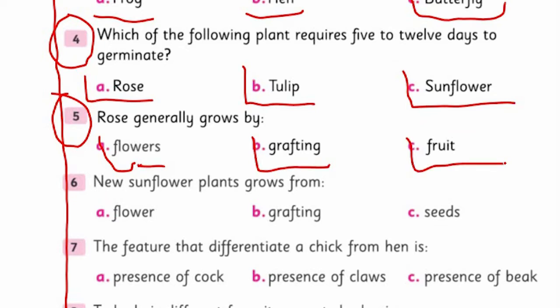We studied two methods for rose: germination of seed or grafting, so you can answer this. Question six: New sunflower plant grows from - flower, grafting, or seed? This was the main difference between the life cycle of sunflower and rose. Question seven: The feature that differentiates a chick from hen.